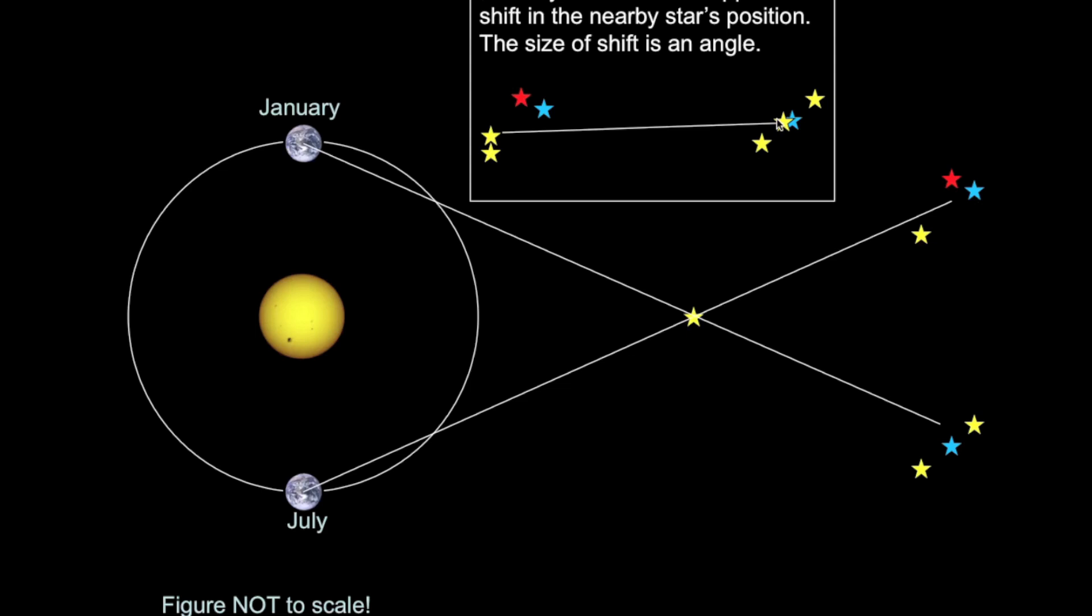We measure angles generally in degrees, but for measurements like this, we're looking at stars that are so far away, degrees as a unit of measurement are too large, and so we have to break it down even smaller. We measure it in fractions of a degree, which are called arcseconds.